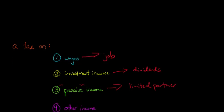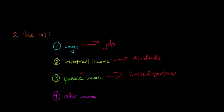There are also all kinds of miscellaneous types of income, things you might not normally think of. For example, if you're receiving alimony, that's actually taxable income. And if you win some kind of prize — let's say you went on a game show and won a new car — that's actually taxable income as well.